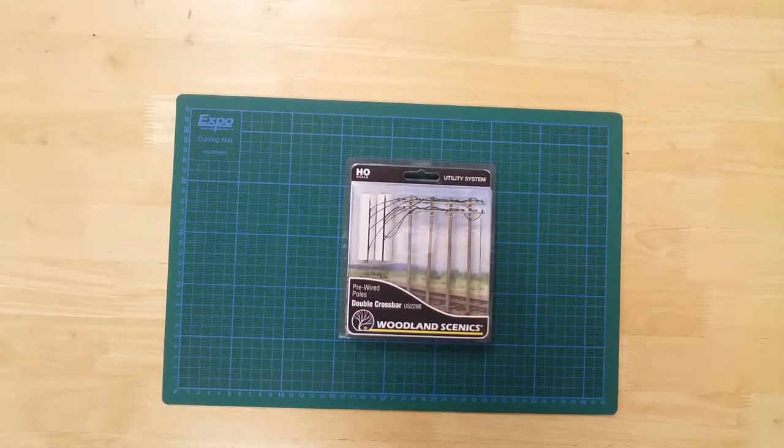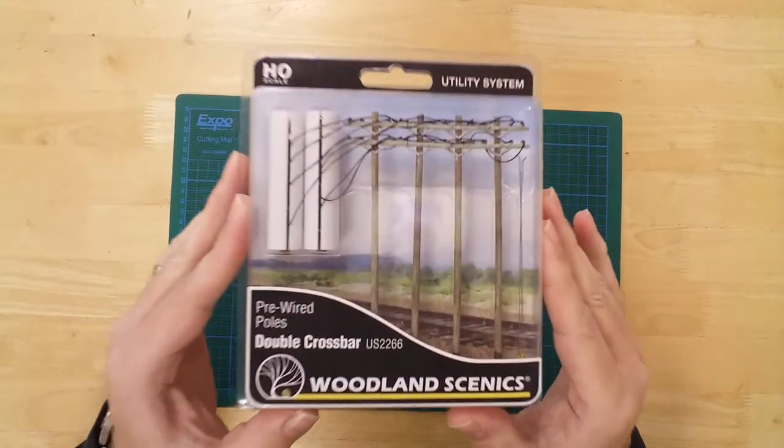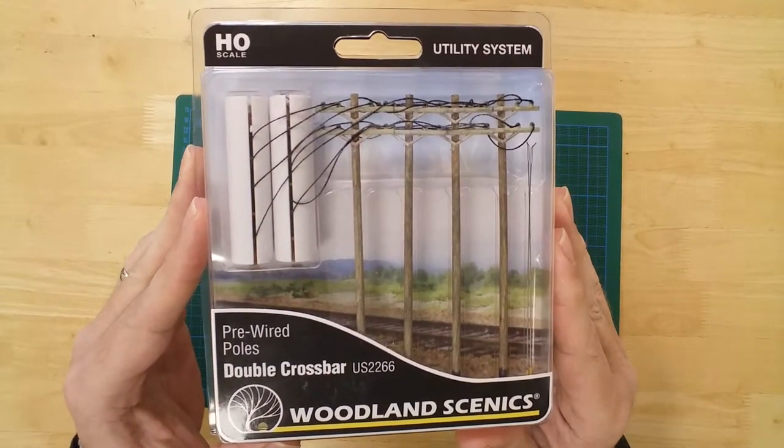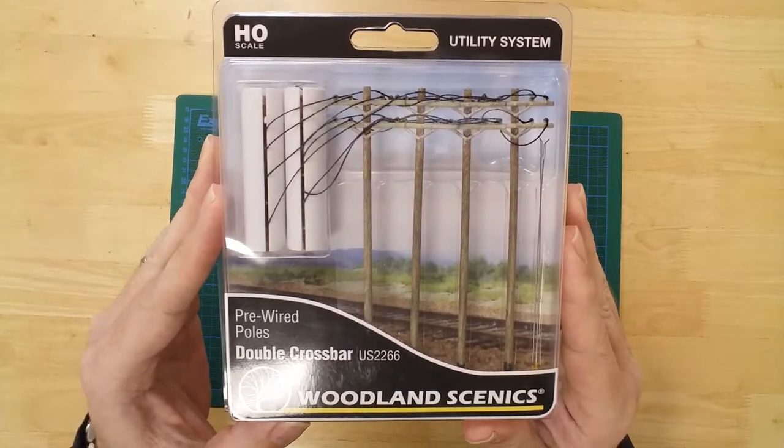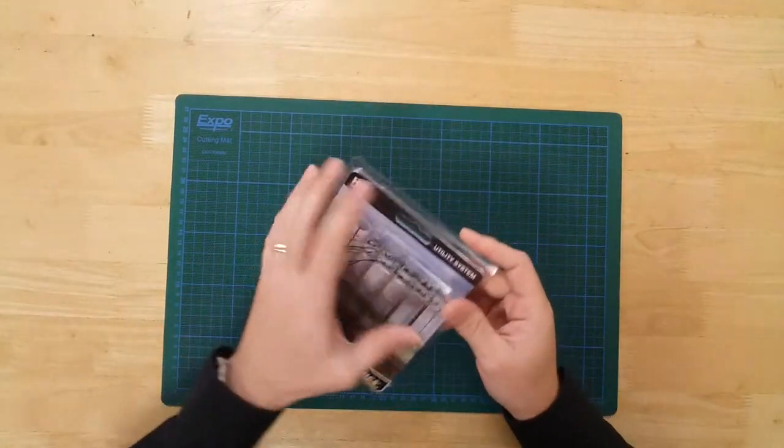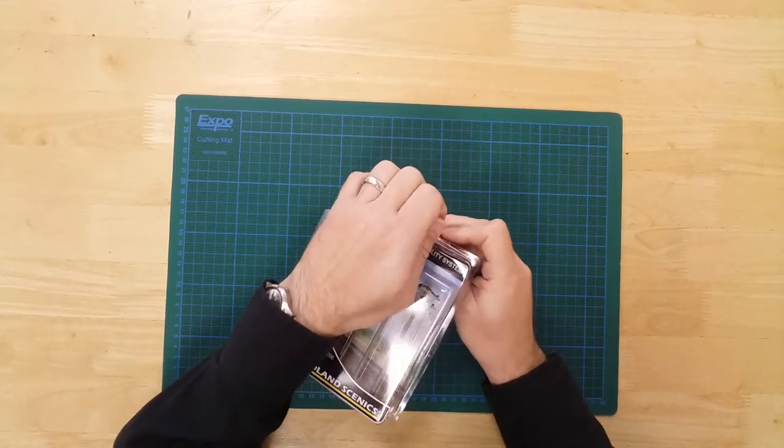This is a set of double crossbar telegraph or power line poles in HO gauge by Woodland Scenics. The models come fully detailed, painted, and with line pre-attached ready for use.